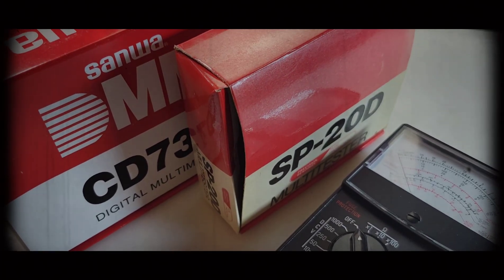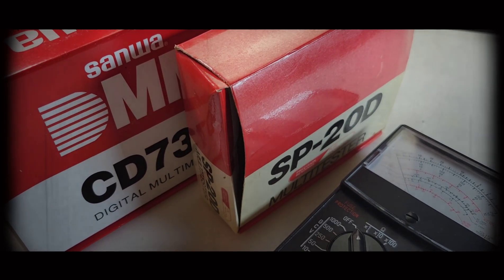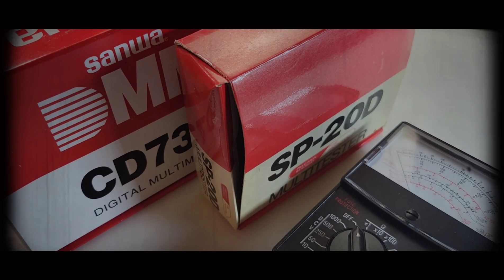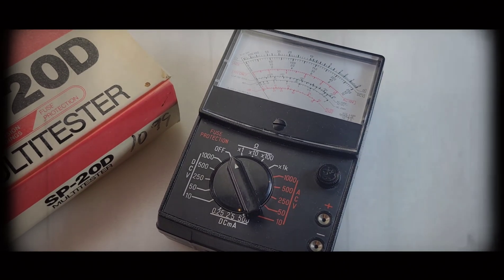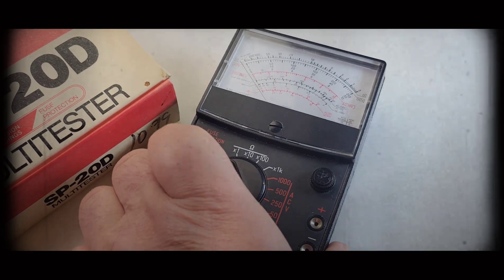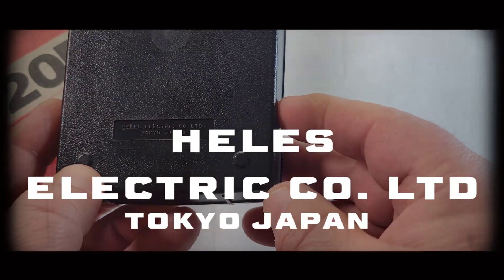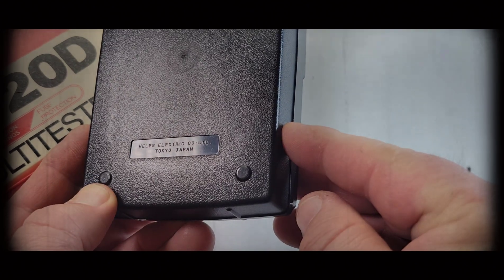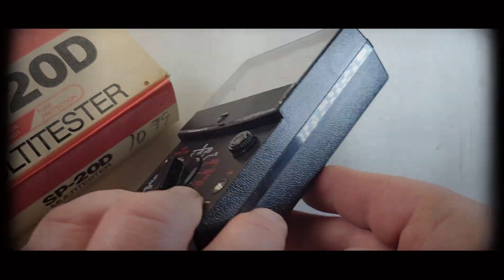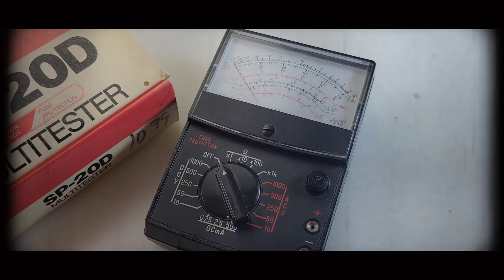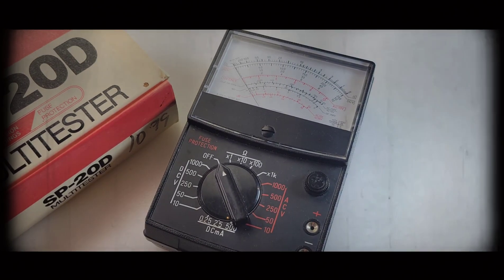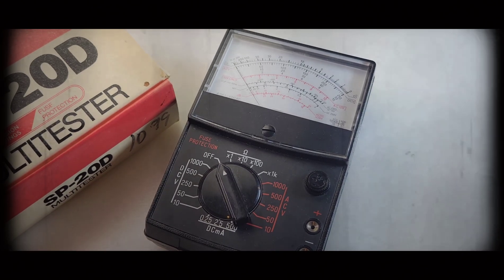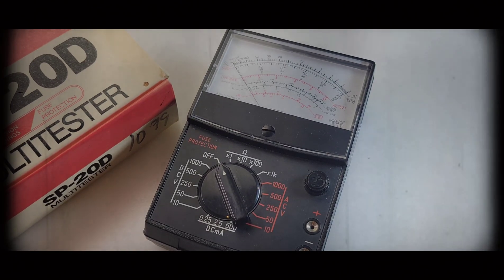So you might have noticed there's a bit of a resemblance, but fear not, this is definitely not a San Juan. SP20D comes from a manufacturer known as Helis, I believe that's how you pronounce it, H-E-L-E-S. Tokyo, Japan, Helis Electric. And you know what, they're still around today. Really unknown, I would say, in the standard North American slash European market, but they are a name in Malaysia, Indonesia, basically Asia per se. And they're still around.